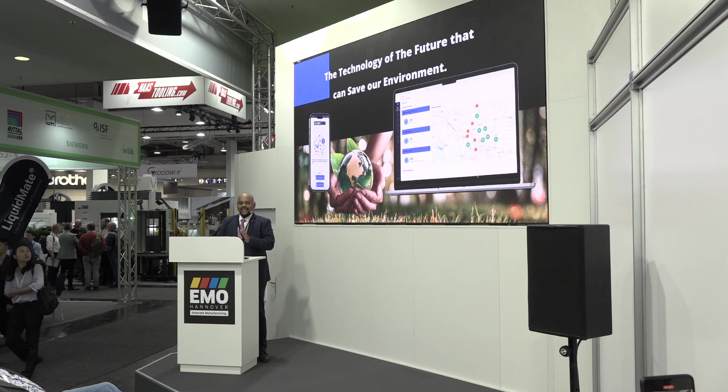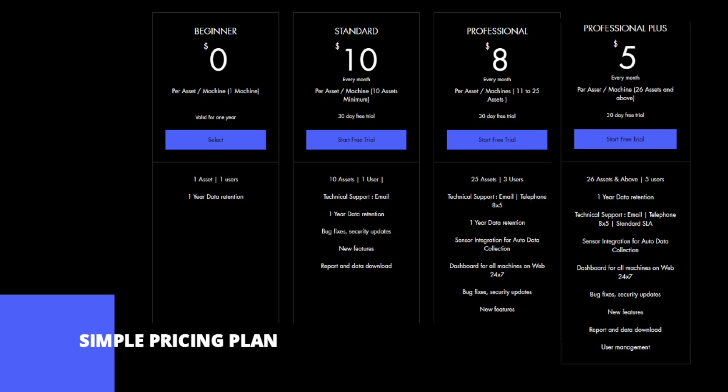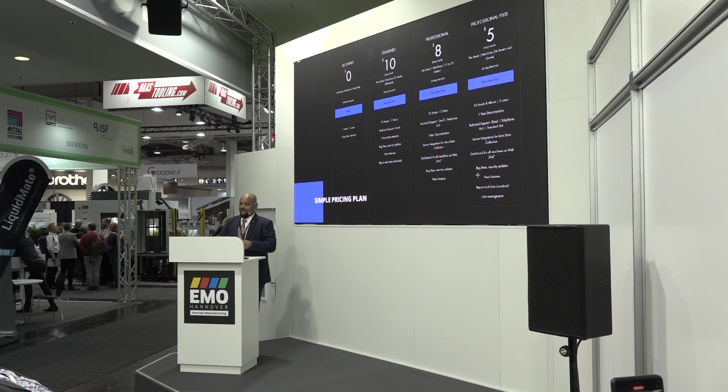Technology of the future can save our environment. Here is our easy pricing plan: if you have just one CNC machine, you can use it for free. Up to 10 machines it's $10 per month — in euros maybe around €8. From 11 to 25 machines it's $8, and more than 25 machines it's $5 per machine per month.